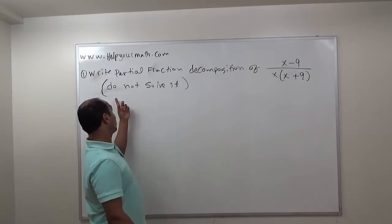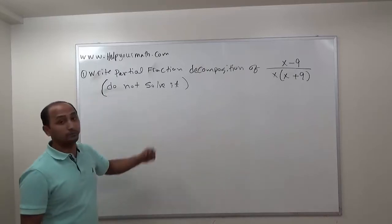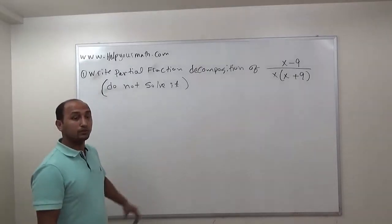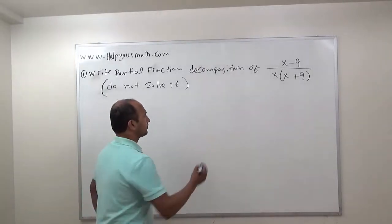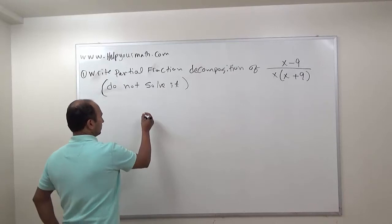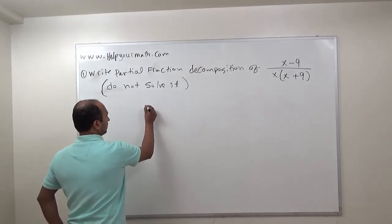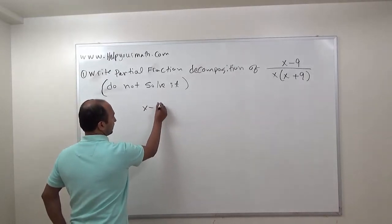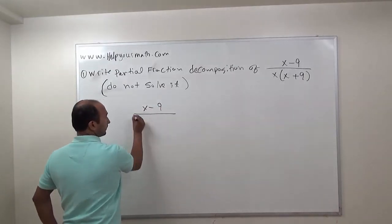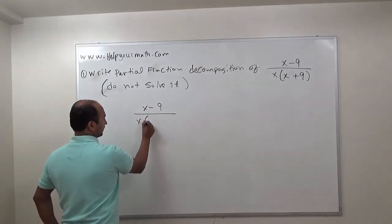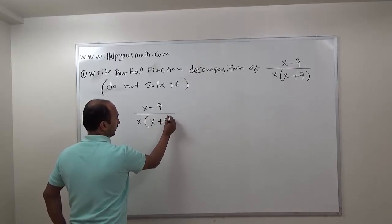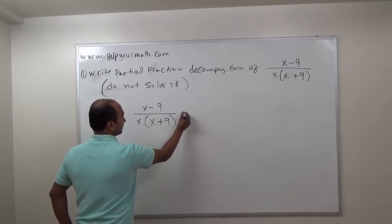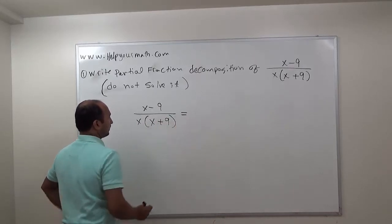The instruction says to not solve it — just write it as a partial fraction. So that's the first step. We will write the expression (x minus 9) over x times (x plus 9), which equals...